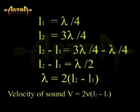As we know, velocity of wave is determined by V = νλ. By substituting the value of λ in the equation, we get velocity V = 2ν(L2 - L1).